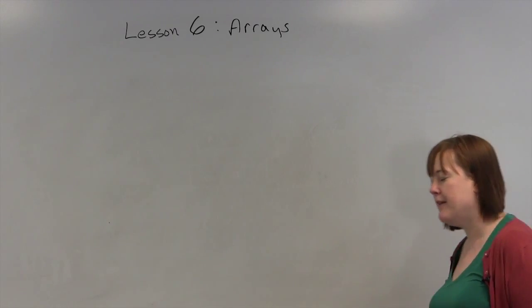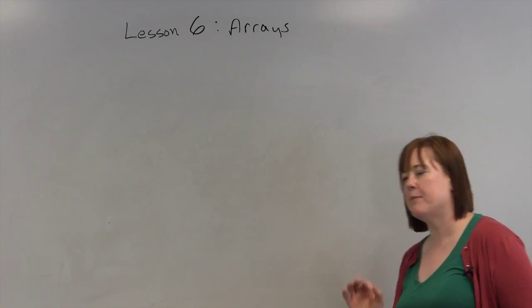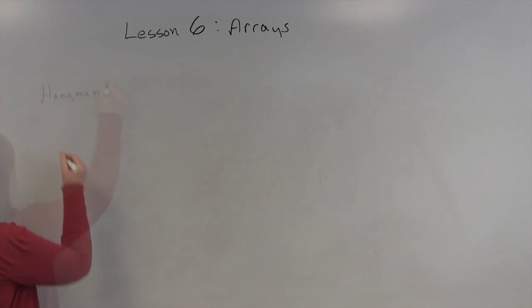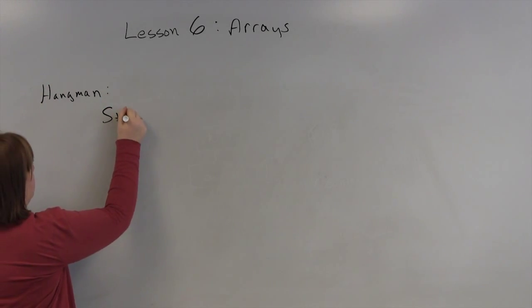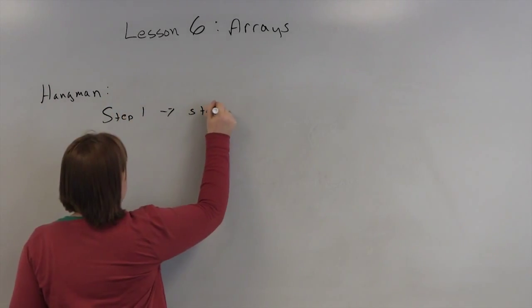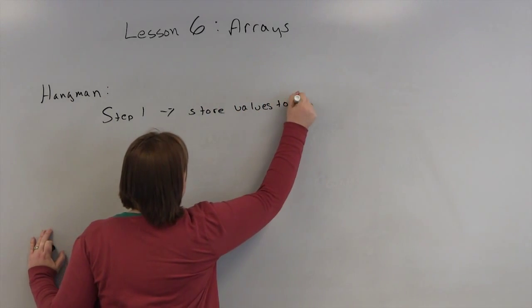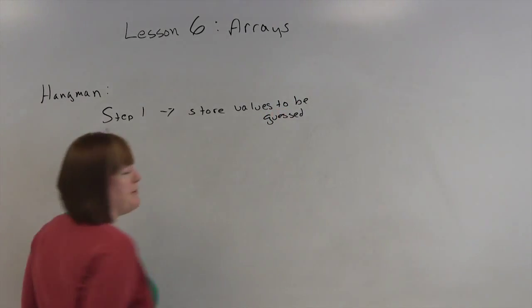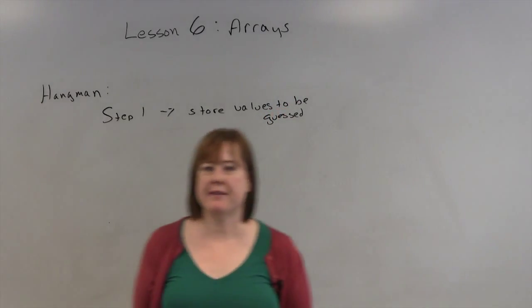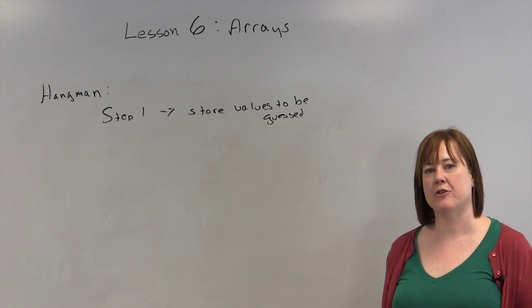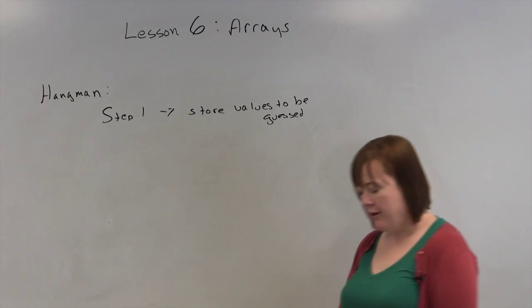And this is all complicated array stuff. So let's just start with the concept of we want to play Hangman, or we want to program Hangman. And step one, store values to be guessed. Well, if it's going to be a good game, you should have at least 10 to 15 possible words that could come up to be guessed. It should be more than that actually. And how would you do that?